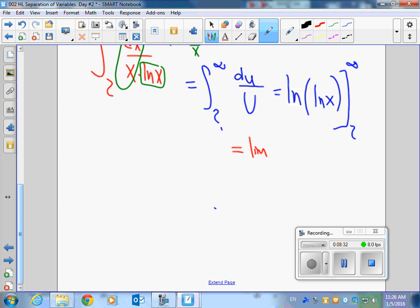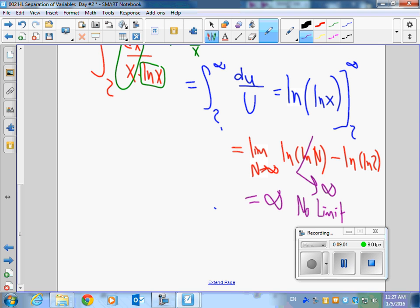You can take the limit as n goes to infinity of the natural log of the natural log of n minus natural log of the natural log of 2. I don't know what this is, but I do know what this is going to do. What's that going to do? Infinity. And so we know that infinity minus whatever is going to be infinity. So there's no limit to that.